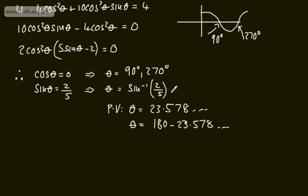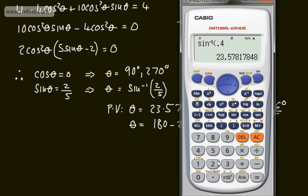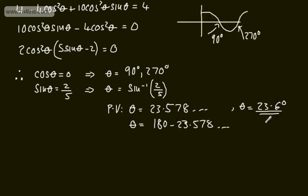So I will give these now to one decimal place. So we can say now that theta is going to be equal to 23.6 degrees. And then we'll do it now for 180, so if we do 180 minus our answer, we can say now that that will be 156.4. So we've got now theta is equal to 156.4 degrees.